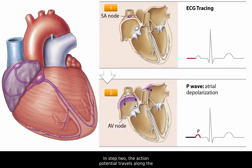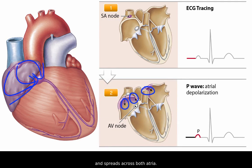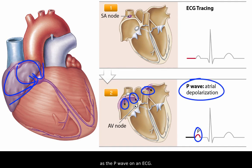In step two, the action potential travels along the conducting cells of the internodal pathways and spreads across both atria. We see this depolarization of the atria as the P wave on an ECG.